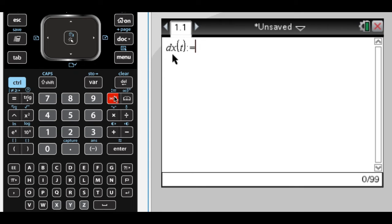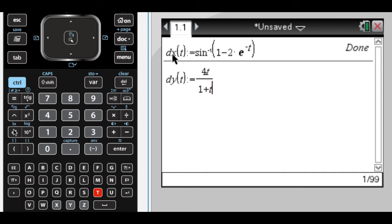So dx of t, and that is the inverse sine of 1 minus 2, and then e to the negative t, so that's gross. And then dy of t is going to be 4t over 1 plus t cubed, like that. All right, so I have them stored, and now I can use them.